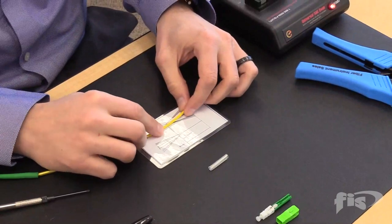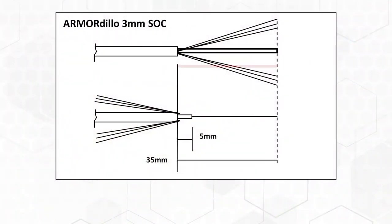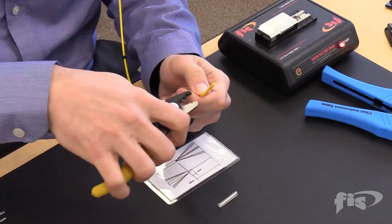Next, use the strip chart to first remove the 3mm cable jacket by measuring 35mm. Take the tri-hole stripper and strip.